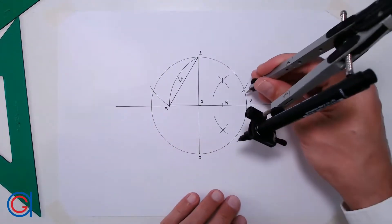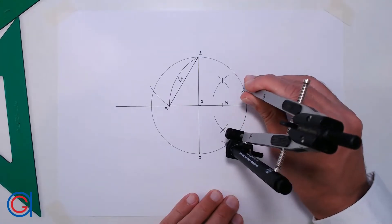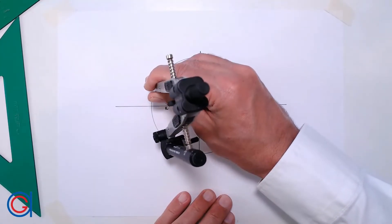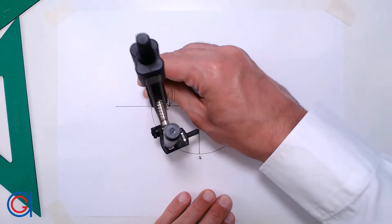And now, setting the compass on the previous points, we scribe another two arcs, as can be seen here, on the right side and on the left side.